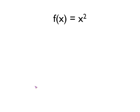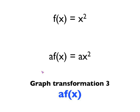The third graph transformation: again starting with x squared, we could square x and then multiply the result by a number a. This is written as a·f(x) — a times f(x) — which literally means take your function of x, in this case x squared, and then multiply it by the number a. So the third graph transformation is a·f(x), or a times f(x).